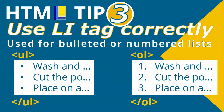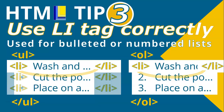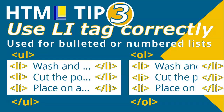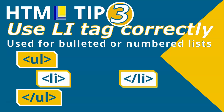Instead, you use the list item tag for each individual item. At the beginning of a bullet you put an LI tag, and at the end of that bullet you put a closing list item tag. The same applies for the ordered list — a list item at the start and a closing list item at the end of each numbered entry. Do that for every item in both unordered and ordered lists. Create your UL or OL tags around the whole list, and wrap each individual item in LI tags.